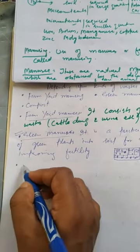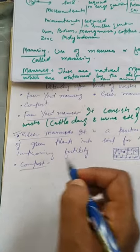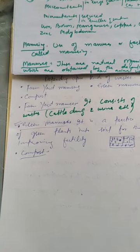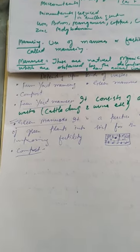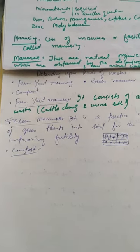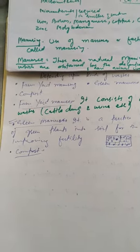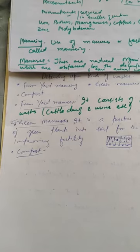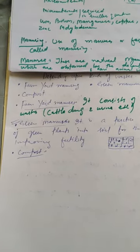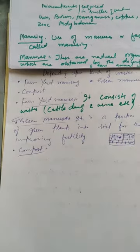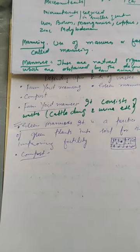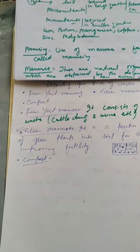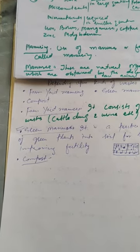The third type is compost. Whether it is animal waste or plant waste, we put those wastes in a pit and cover it with mud for about 5-6 months. After that, we get semi-decomposed matter which is utilized as manure in the form of compost. This way we can utilize house wastes without creating pollution.